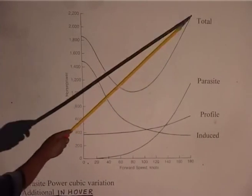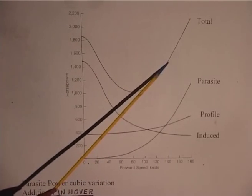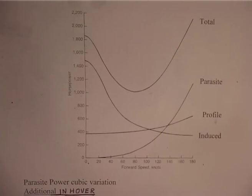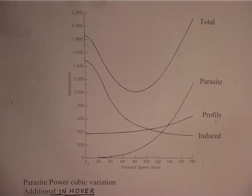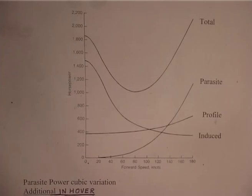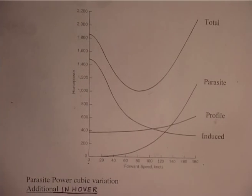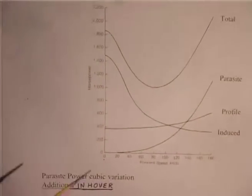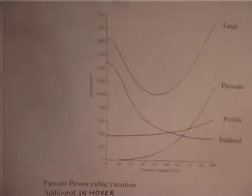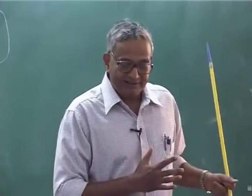If you sum up all major power components, the total power curve is high in hover, decreases with forward speed, and then starts increasing. The slope is very sharp at high speed — any increase in speed, power required goes as V cubed. When you select an engine for a helicopter, you must consider what power is available and what is required for a specific flight condition. As you go to high altitude, the density variation affects engine power as well as the power required.